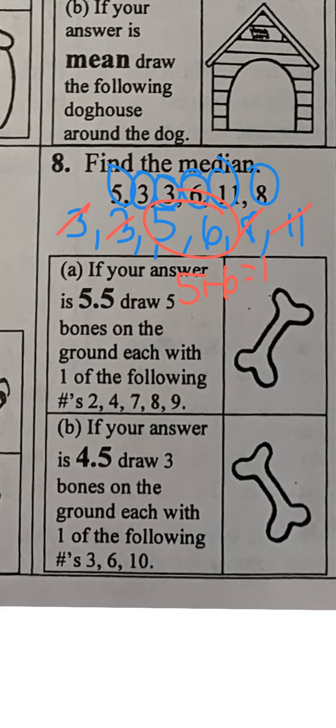I can't cross any more off because I'd be in the middle. So I want to take these two numbers, add them together. 5 plus 6 equals 11, then divide it by 2. When I do that, I get 5.5. That's my answer - you're going to draw 5 bones on the ground.